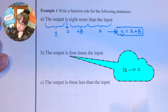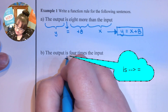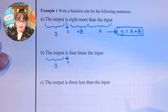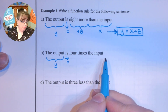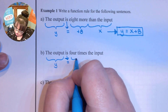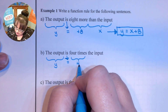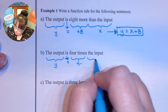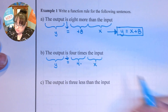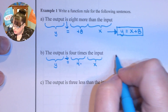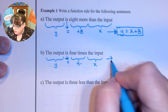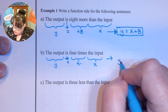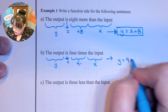The output is 4 times the input. Again, 'is' is our equal sign. The output is y and then 4 times the input — '4 times' means 4 multiplied. We'll use a dot to show multiplication. But we typically don't write the dot x; we just write it as y equals 4x.